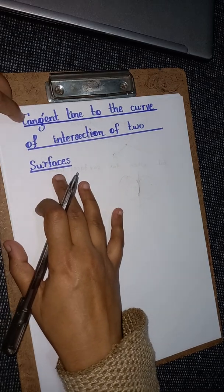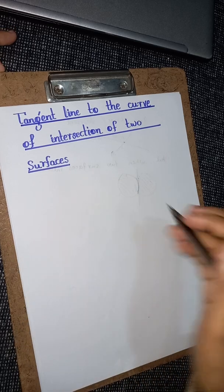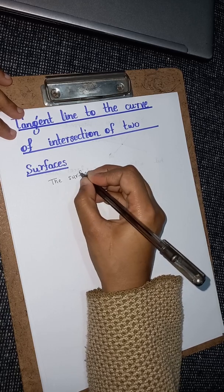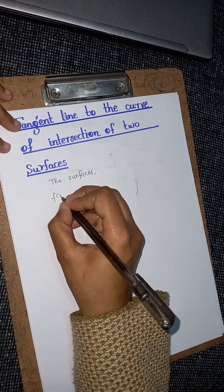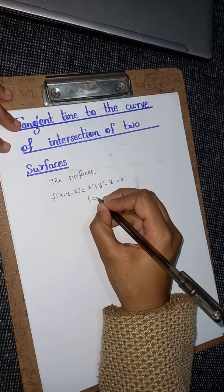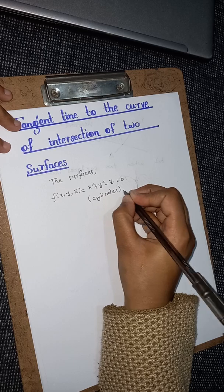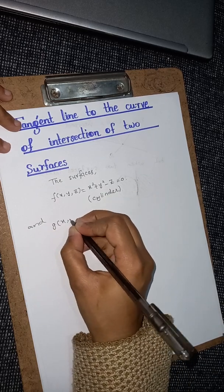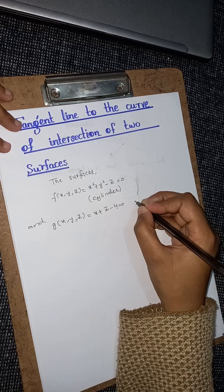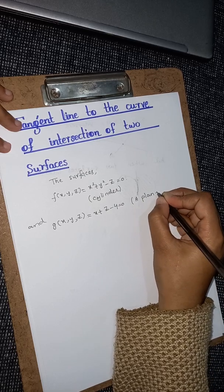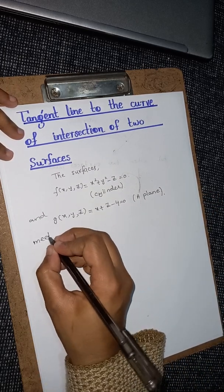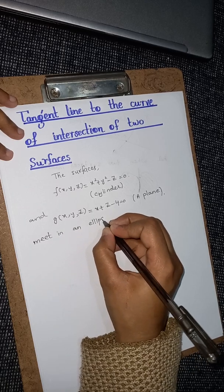Let us look at a particular question. The surfaces are: our first surface is f(x, y, z) = x² + y² − 2 = 0, which is basically a cylinder. And the other surface is g(x, y, z) = x + z − 4 = 0, which is basically a plane.